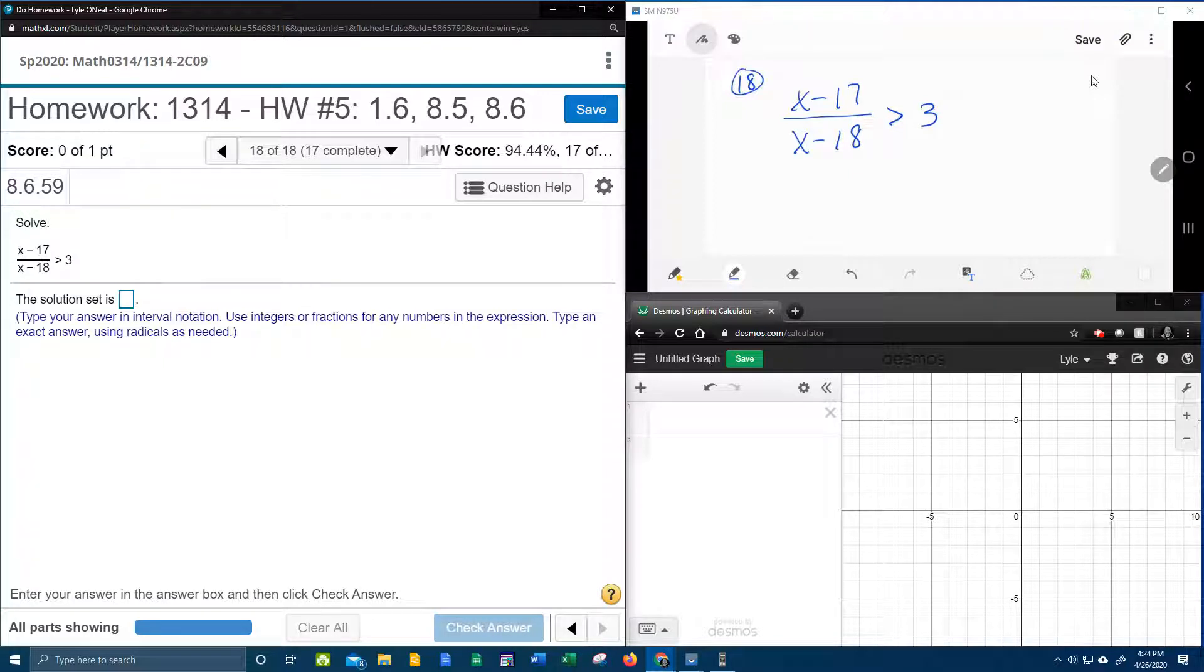The first thing I notice is that the right-hand side is not 0, and it needs to be. So the first step is to bring this 3 over to the other side so that we can make that greater than 0. That's going to give us (x - 17)/(x - 18) minus 3 greater than 0. You do have to have it greater than or less than or whatever the inequality is to 0.